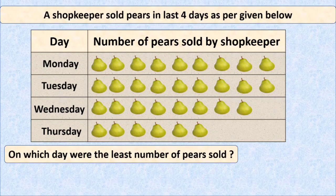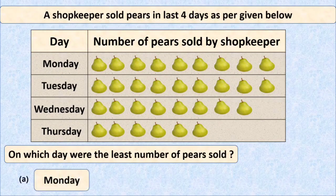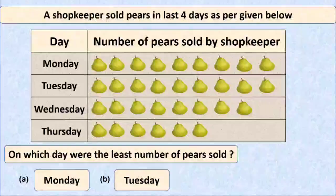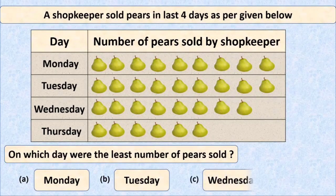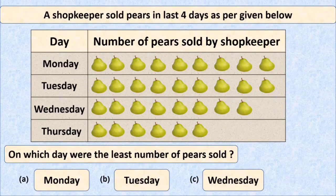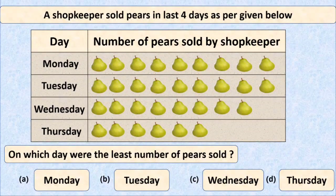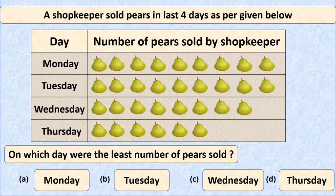The four options we have here are: option A is Monday, option B is Tuesday, option C is Wednesday, and option D is Thursday. We have to choose the correct option and put a tick mark there.